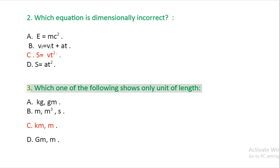Question 3: Which one of the following shows only unit of length? A: kilograms, grams. B: m, m cubed, s. C: kilometers, m. D: gm, m.